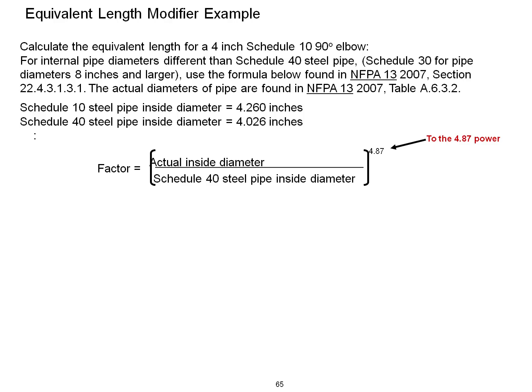This slide is for an equivalent length modifier example. Calculate the equivalent length for a 4 inch Schedule 10 90 degree elbow. For internal pipe diameters different than Schedule 40 steel pipe, Schedule 30 for pipe diameters 8 inch and larger, use the formula below found in NFPA 13, Section 23.4.3.1.3.1.